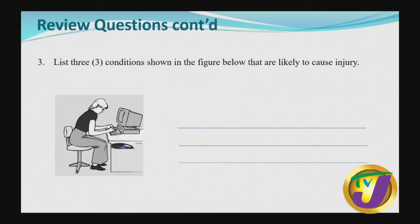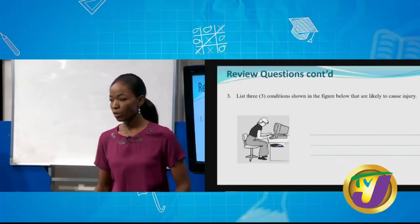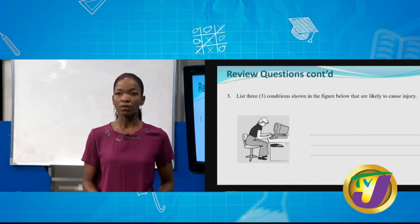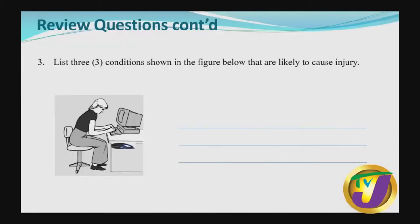Looking at the graphic on screen, the question says there are three conditions shown in the figure that may cause injury to the worker. The first is they are not positioned properly on the chair — they are not sitting correctly. Second, the chair does not support the lower back. Third, the desk is not ergonomically designed so it cannot be adjusted, and the mouse is too far away from the reach of the user. These are things we need to take into consideration when designing or using our furniture.